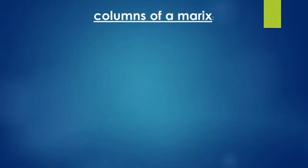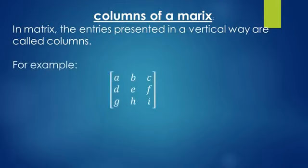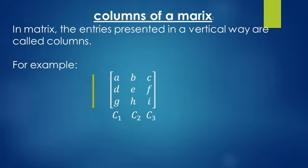Columns of a matrix: in a matrix, the entries presented in a vertical way are called columns. For example, here we have a matrix with elements a, b, c, d, e, f, g, h, i. The vertical entries show the columns of the matrix: a, d, g is called Column 1; b, e, h is called Column 2; and c, f, i is called Column 3.